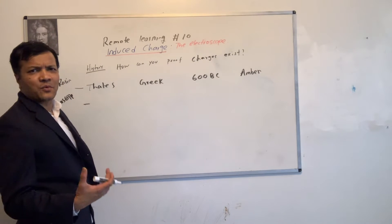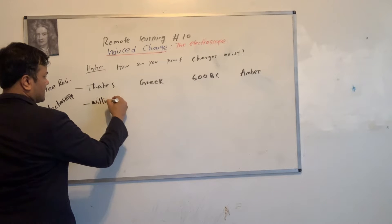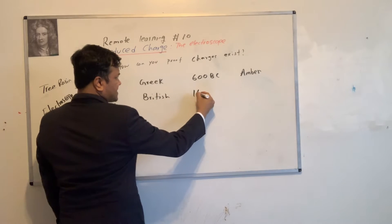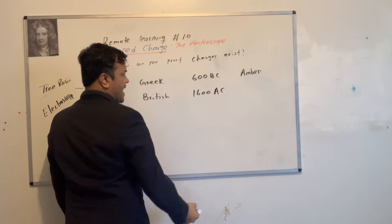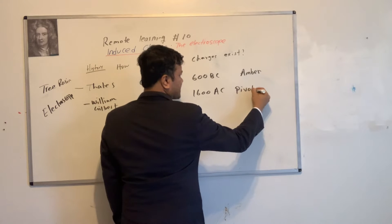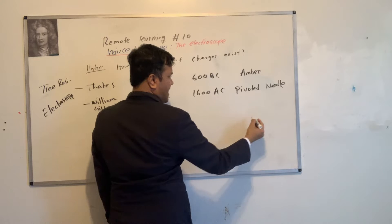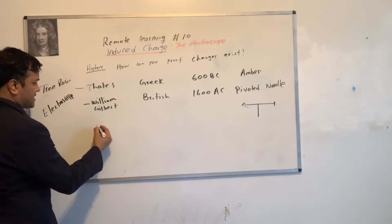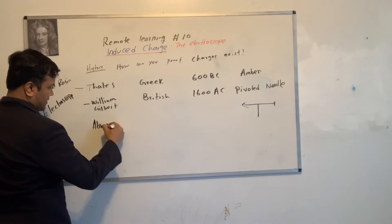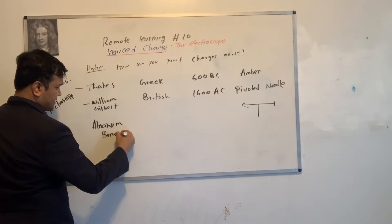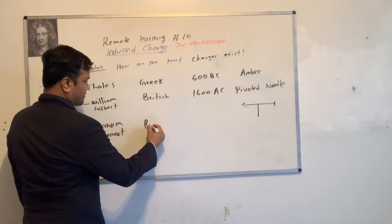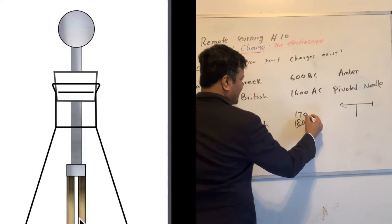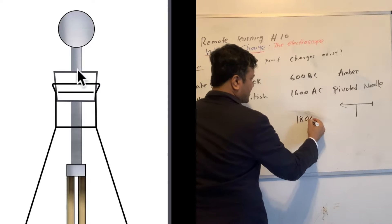The first electroscope was invented by someone named William Gilbert. He was British — the year was 1600 AC. He called it the 'pivoted needle.' The most sophisticated one was invented by Abraham Bennett, also British. The exact year is 1798, but remember 1800. He called it the gold leaf electroscope.